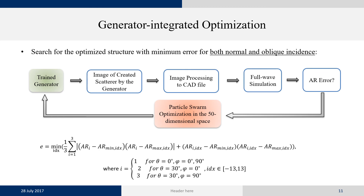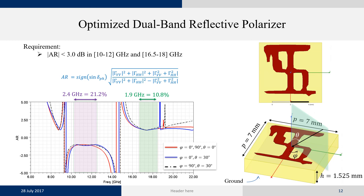First, we designed a dual-band reflective polarizer where the CP waves are orthogonal in the two bands, targeting 10–12 GHz for the lower band and 16.5–18 GHz for the upper band. The optimization using the generator produced a new design that is notably angularly stable for both normal and oblique incidence, achieving even more bandwidth than requested in both bands while maintaining orthogonality of the CP waves.